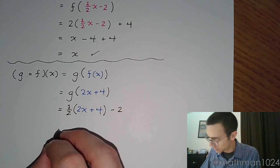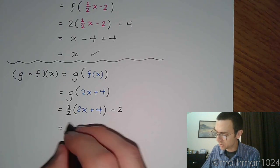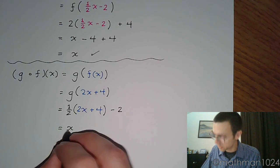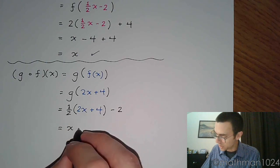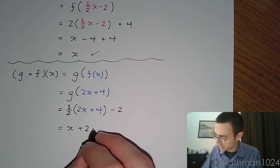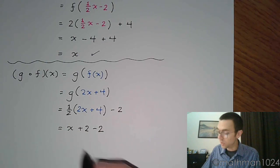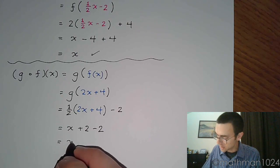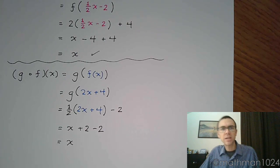Now let's distribute. Half of 2x is just 1x, half of 4 is 2, and then minus 2. And when you simplify this, you again get x.